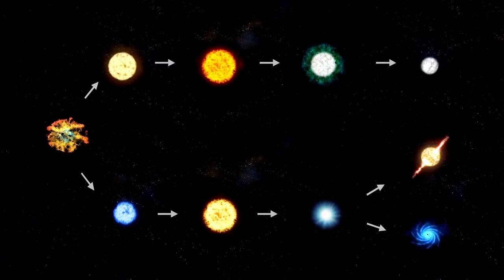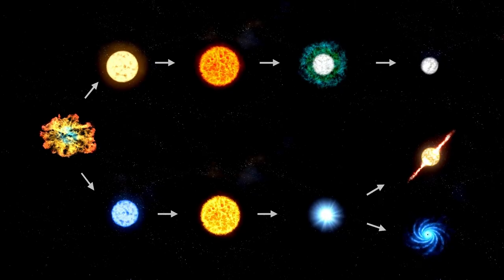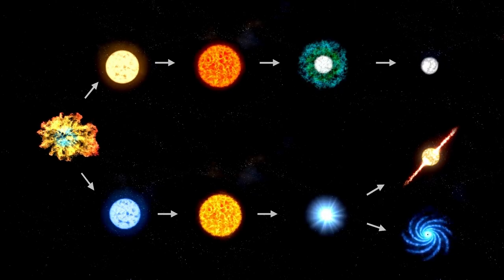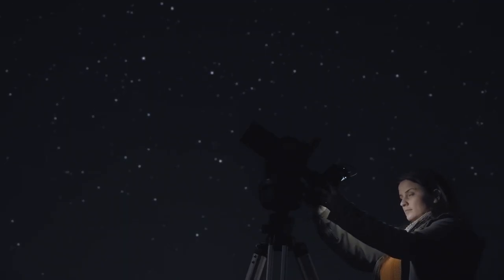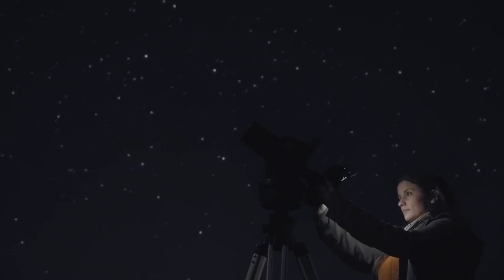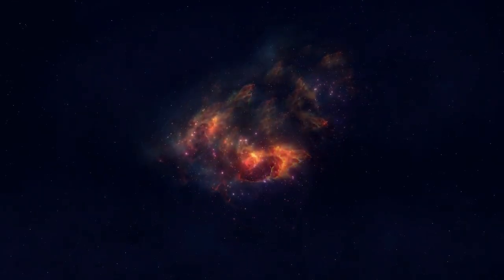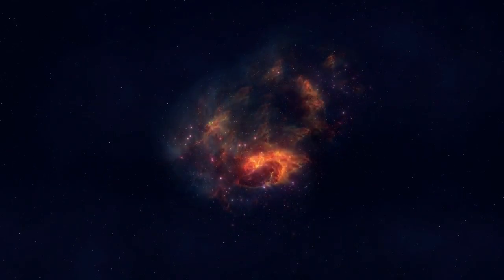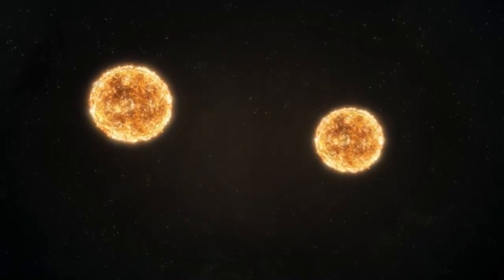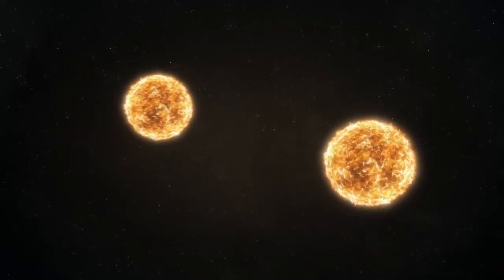The possibility looms that Betelgeuse could soon end its life in a supernova, releasing an overwhelming burst of energy. To understand the unfolding circumstances around this star, one that has intrigued both professional astronomers and casual observers for generations, requires a closer look at its current state and the forces at work. Betelgeuse is located in the constellation Orion